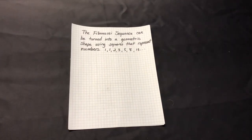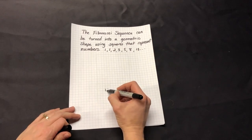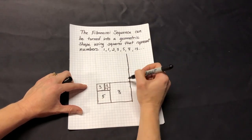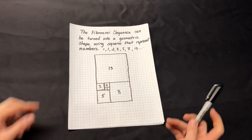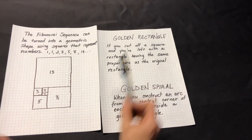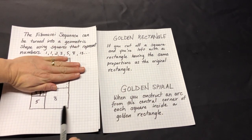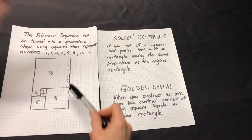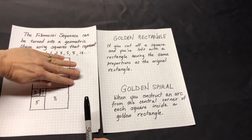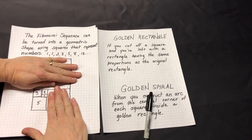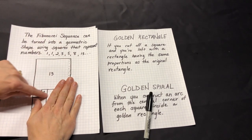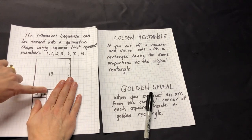We can represent phi in picture form. Start by making a square that's one unit big — this is what's known as a golden rectangle. A golden rectangle is a rectangle where if you cut off a square, you are left with a rectangle that has the same proportions as the original rectangle. And of course, you can cut off the square again, and again, down to infinity.